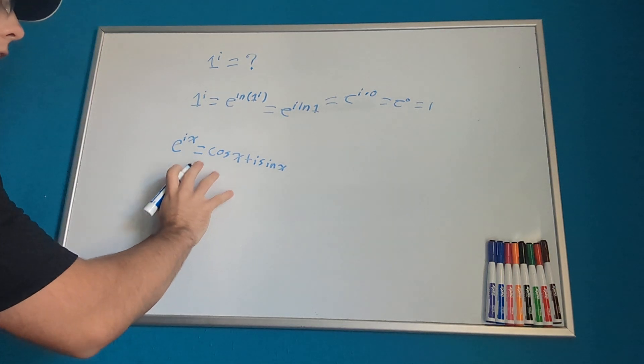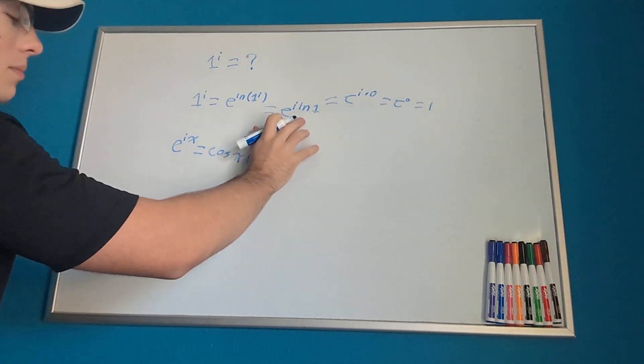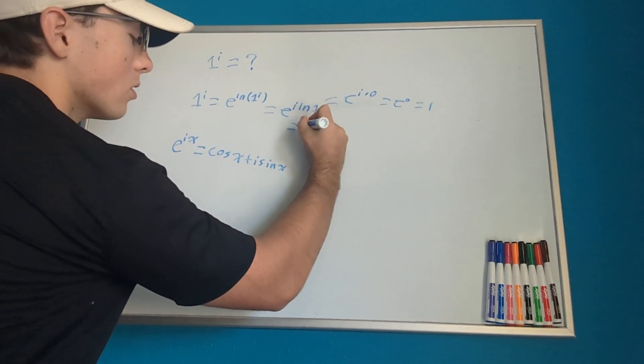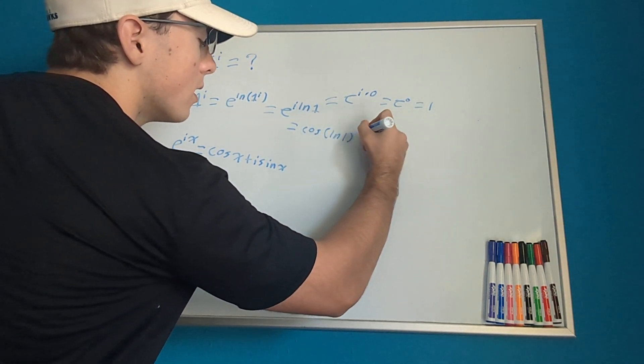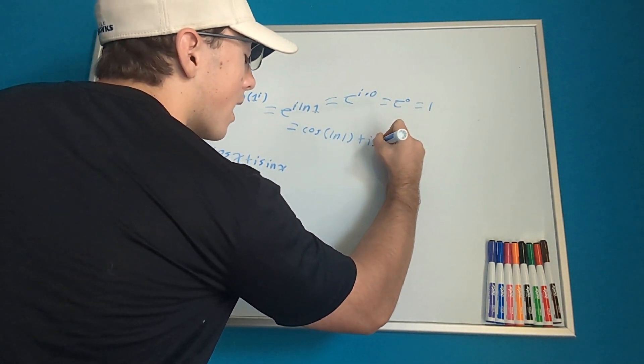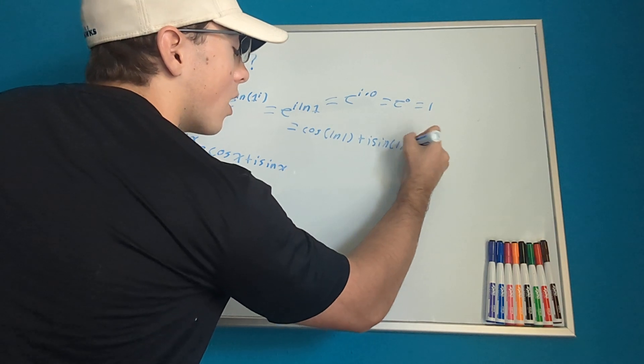So if we look, we can see we can do that exact same thing here. So we can say this equals cosine of the natural log of 1 plus i sine of the natural log of 1.